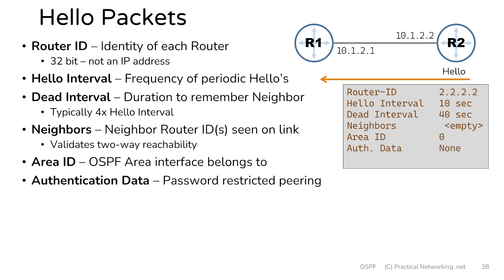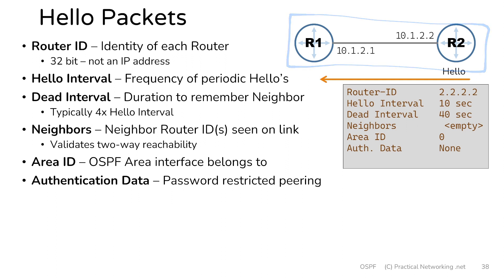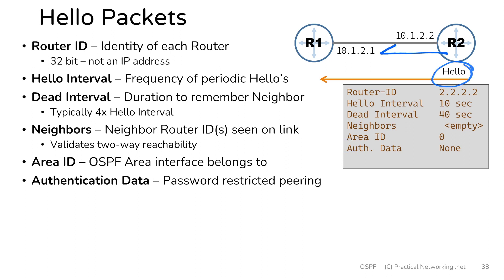Next, we have authentication data. Often in production networks, you only want to do OSPF peering with other routers that you designate. The way you do that is by setting a password within OSPF, mandating that you will only form a neighbor relationship with other routers that include that same password. That password information is included in the authentication data section of the hello packet and is included in every single hello packet sent by each router. In this case, router 2 is not currently doing password-restricted peering, hence there's nothing in the contents of this field.